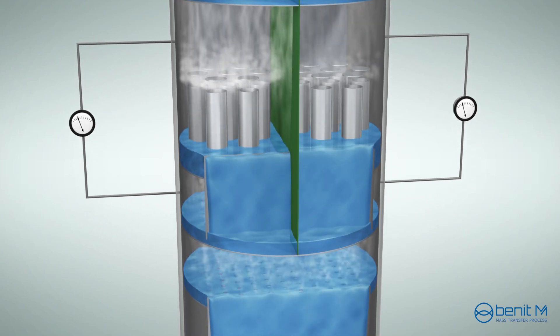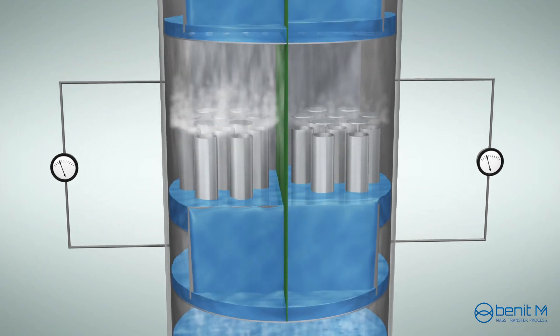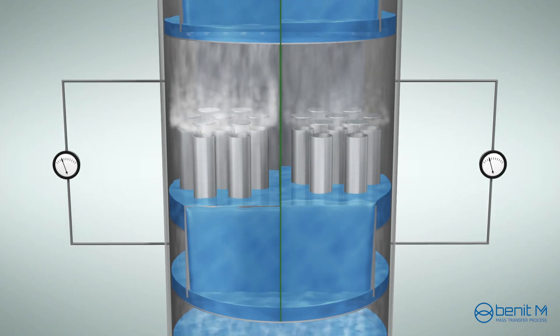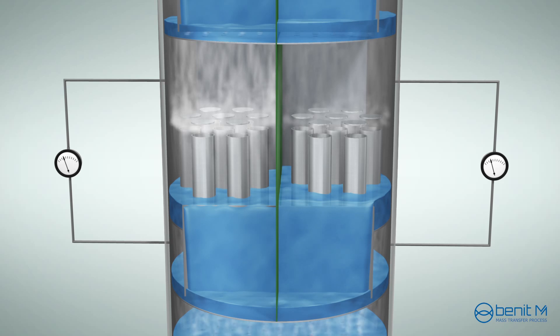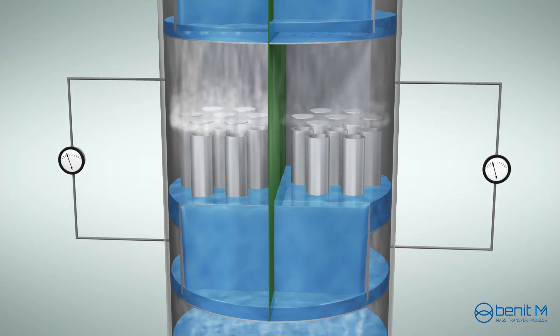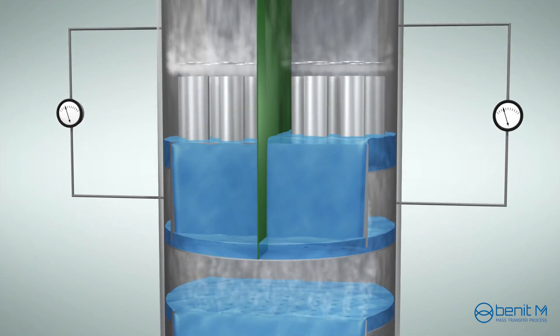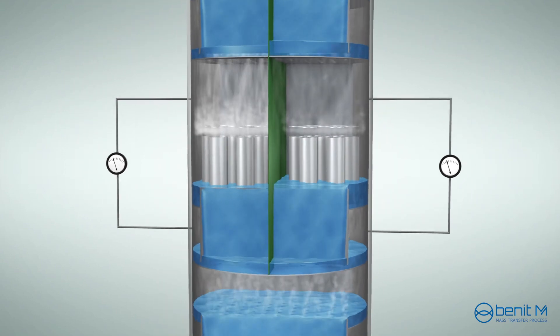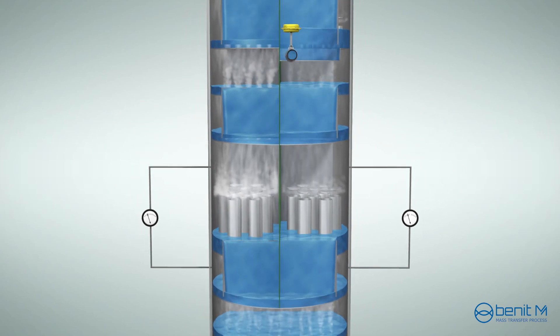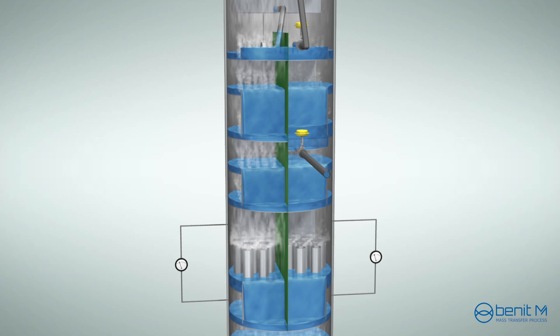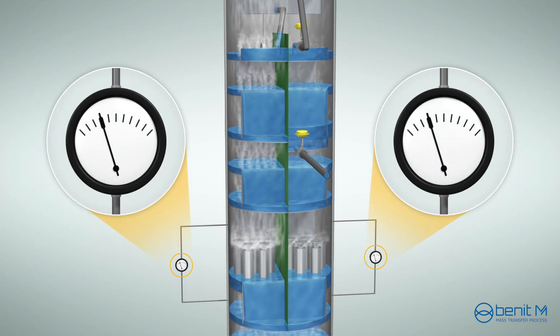Most existing vapor splitters are designed to have a fixed open area for vapor flow. Therefore, the vapor split ratio cannot be regulated with respect to changes of liquid split ratio. The vapor split ratio responds in the opposite way to the liquid split ratio change, naturally depending on the variation of the hydrostatic pressure of liquid in each section. Therefore, it results in an unfavorable loss of separation efficiency.